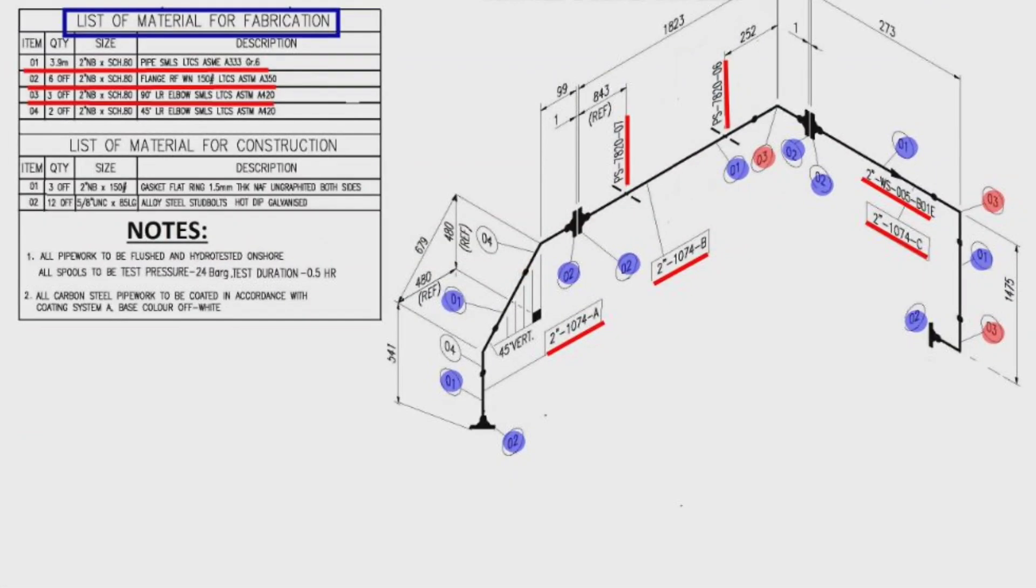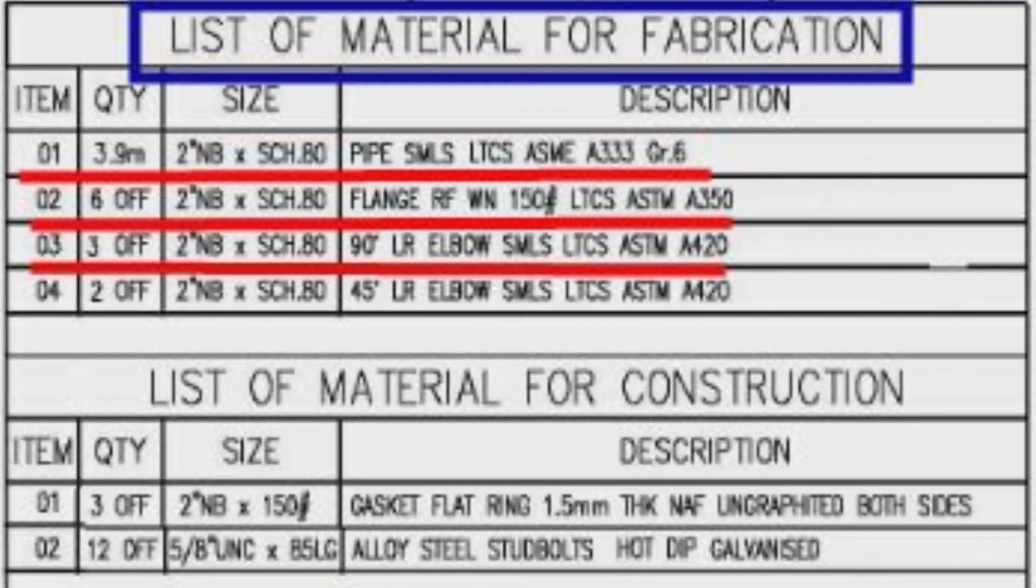Detail number 4 was used two places in the pipe drawing. The item number 4, the quantity total is 2 pieces, size is 2 inches, wall thickness is schedule 80, 45-degree long radius elbow, seamless type, low temperature carbon steel material, ASTM A420.